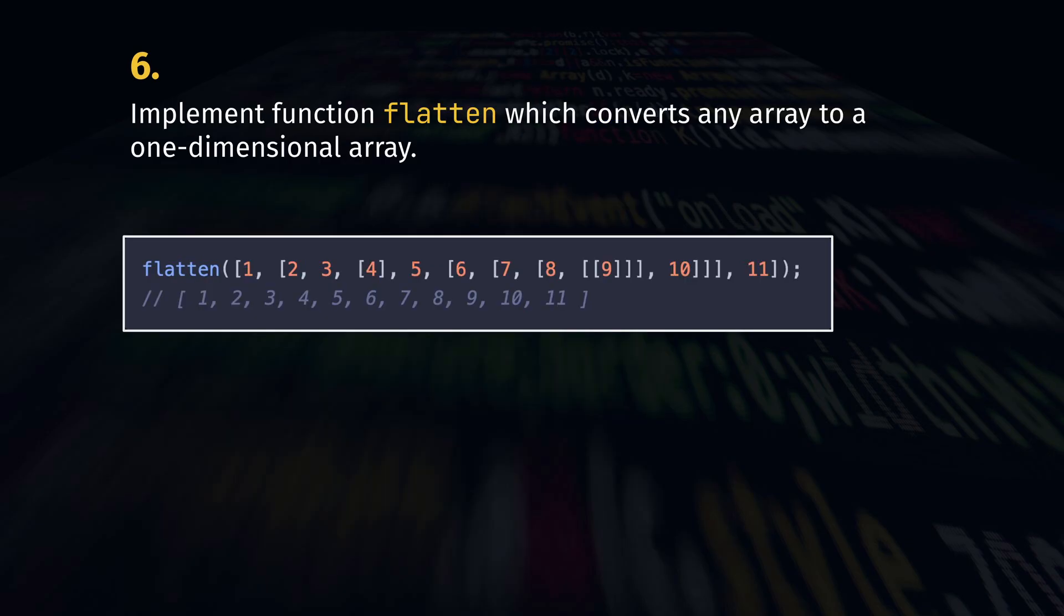Implement function flatten, which converts any array to a one-dimensional array, no matter the structure and how many nested arrays there are.